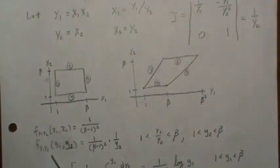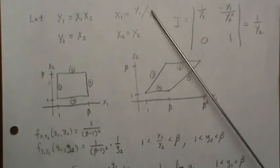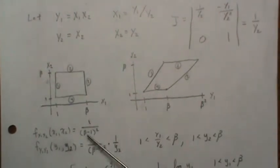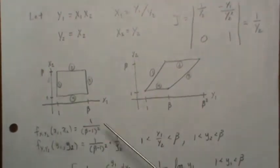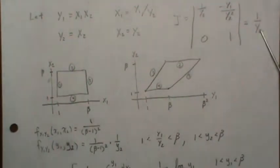Then to find the f of y1 and y2, we plug in these back transformations into our density, but there's nowhere to plug them in, so you just get it back times the absolute value of the Jacobian.